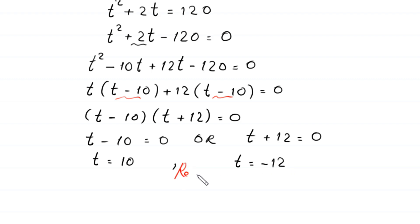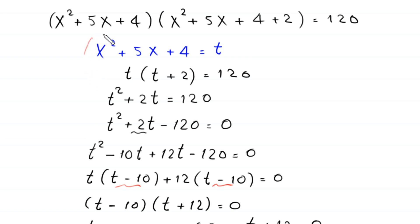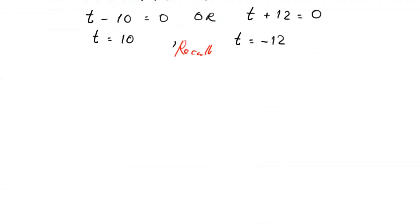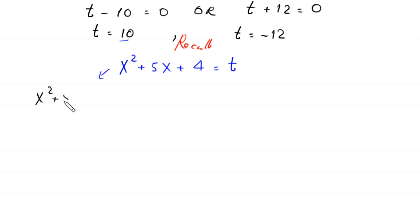Recall that we supposed x²+5x+4 = t. When t = 10, the equation becomes x²+5x+4 = 10.